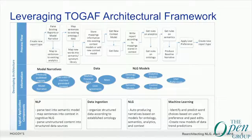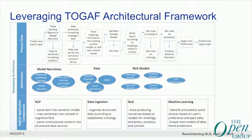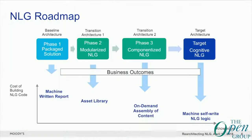This is an example of one of the many diagraphs we have produced using the TOGAF architectural framework, where at the top we describe the process flow, and at the bottom we describe the information we leverage — like model narratives, data, network language generation models, the logical application components, and the capabilities needed to achieve our tasks. This led through many iterations to our natural language generation roadmap.